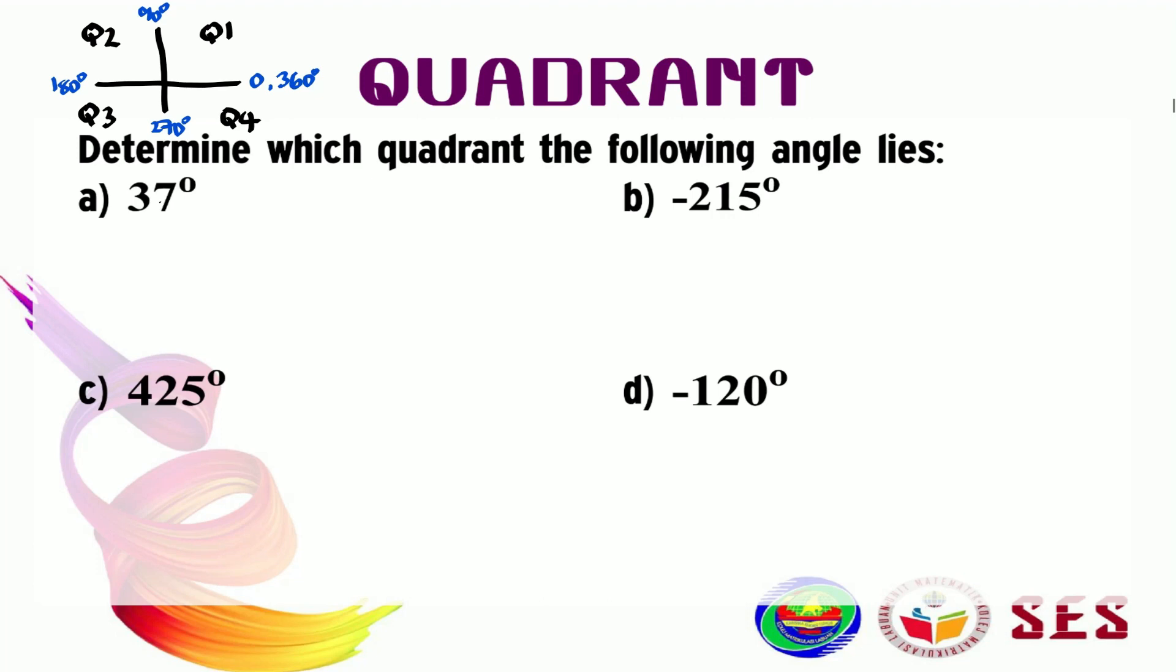The first example is quite the easiest. It's 37 degrees. We know that this is a positive angle. Positive angle means going to move in anti-clockwise rotation like this. And we know that 37 lies between 0 and 90 degrees. Therefore, 37 degrees lies in the first quadrant.